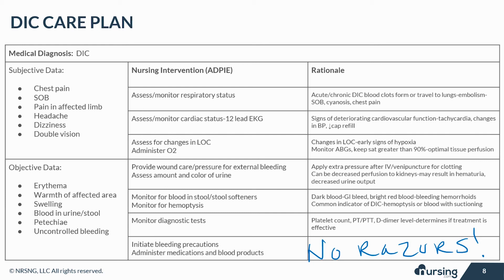Heparin may be used for chronic DIC when clotting is more of a problem. Excessive blood loss may require a transfusion, and antibiotics are indicated when sepsis or infection is the underlying factor.